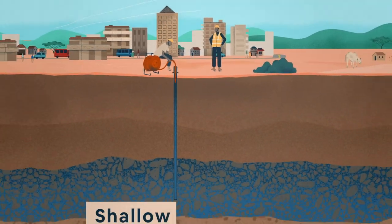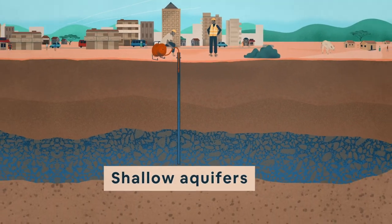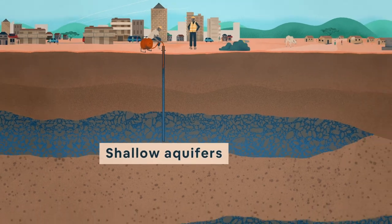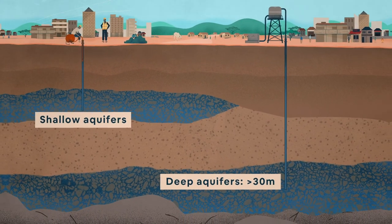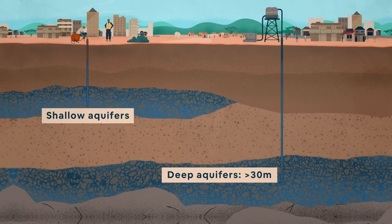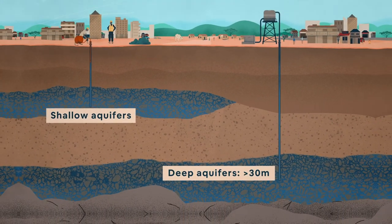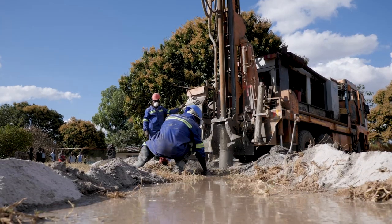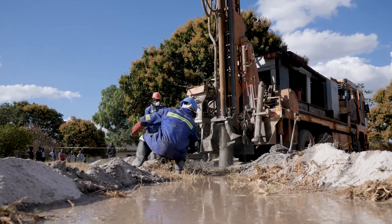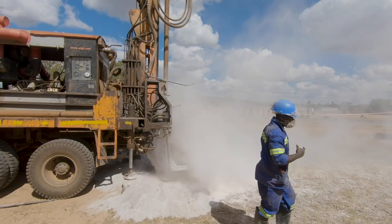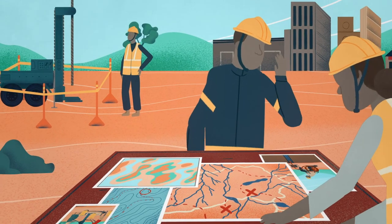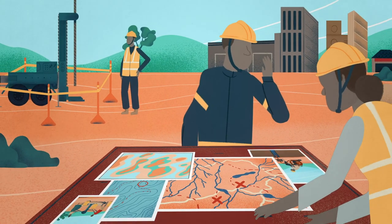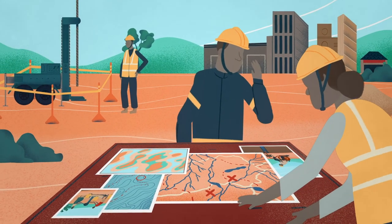Shallow aquifers are fairly close to the surface, whilst deep aquifers are much further down. Groundwater occurs almost everywhere, but in some places finding it is difficult.